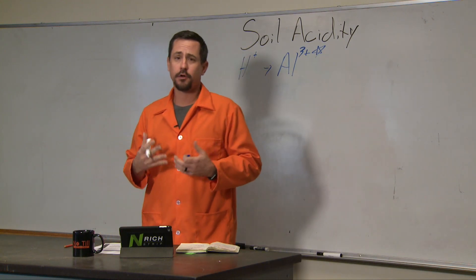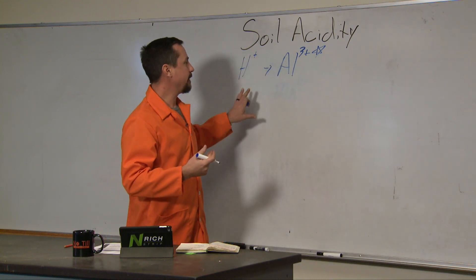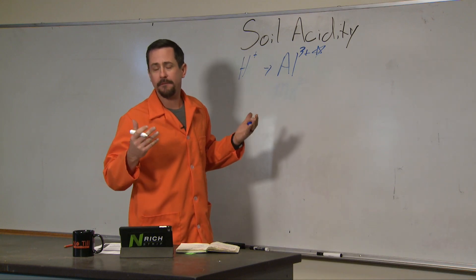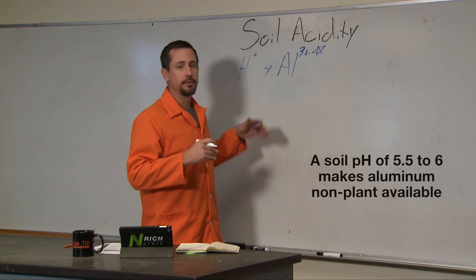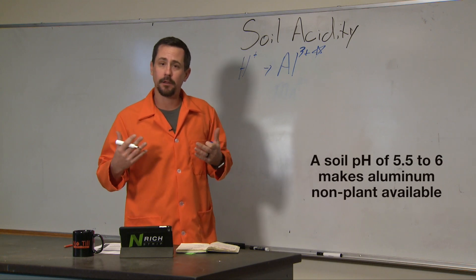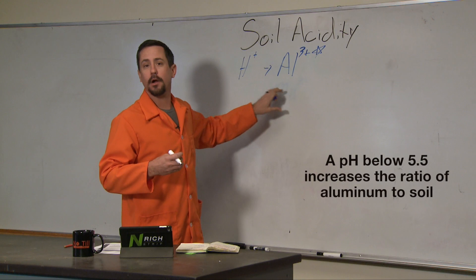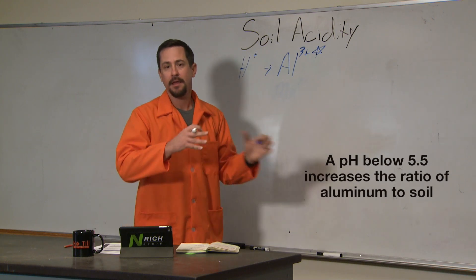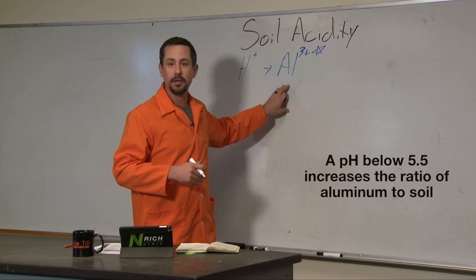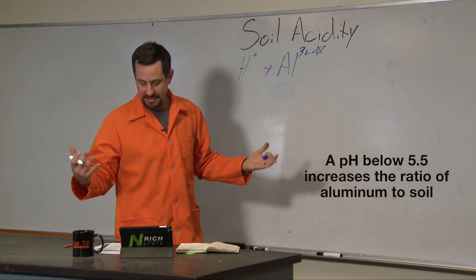We have a lot of aluminum in our soil already, but when you have a soil pH above 5.5 to 6, that aluminum is in a form that is non-plant available and non-toxic. But when soil pH starts dropping below 5.5, the ratio of aluminum 3+ in soil solution starts increasing.